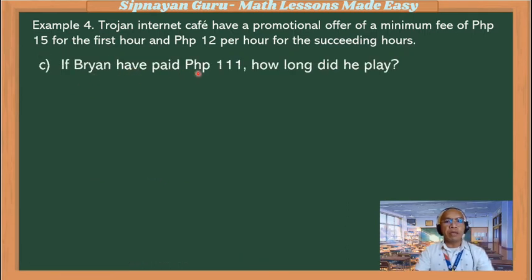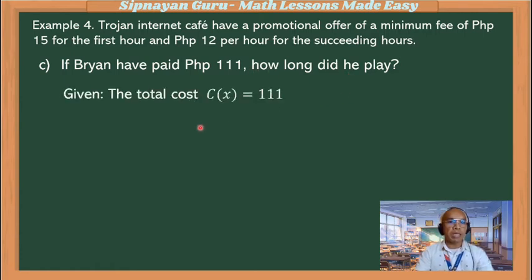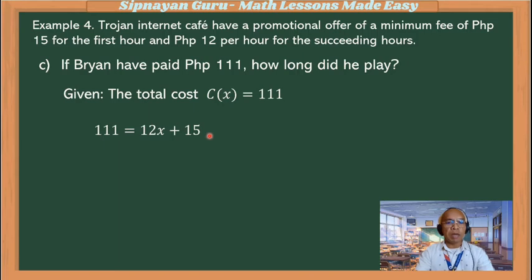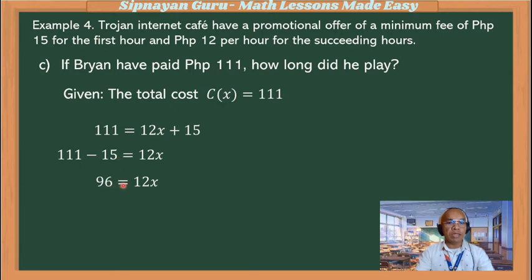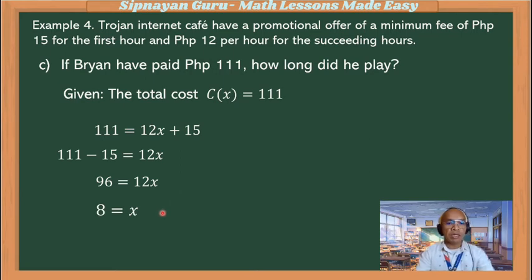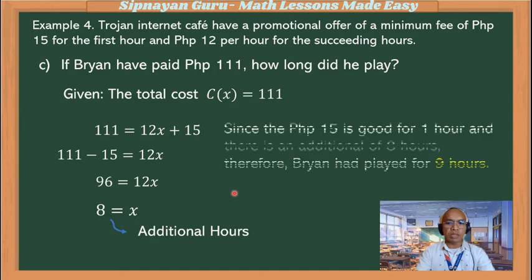If Brian paid 111 pesos, how long did he play? The total cost C(x) is 111. So 111 = 12x + 15. By the addition property of equality, transpose 15 to the left: 111 minus 15 = 12x, so 96 = 12x. Divide both sides by 12, so x = 8. Since the 15 pesos is for 1 hour and there is an additional 8 hours, therefore Brian played for 9 hours, which is why he was charged 111 pesos.